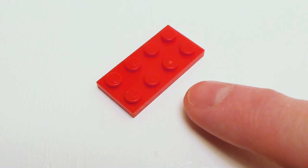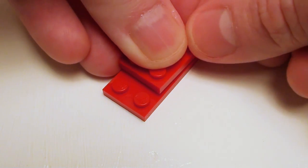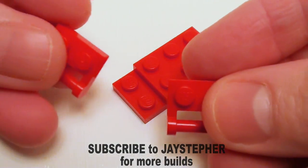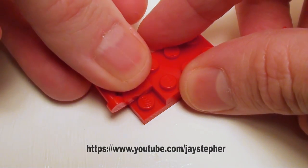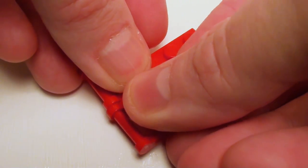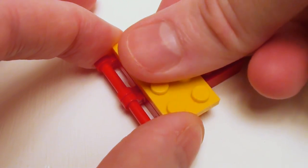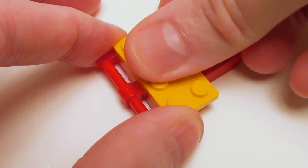For the deck of our slide, take a 2 by 4 plate. Let's set down a 2 by 3 plate on this side, and a set of 1 by 2 plates with stick. These are going to be used to help attach our ladder. And let's sandwich this together with a 2 by 4 plate.